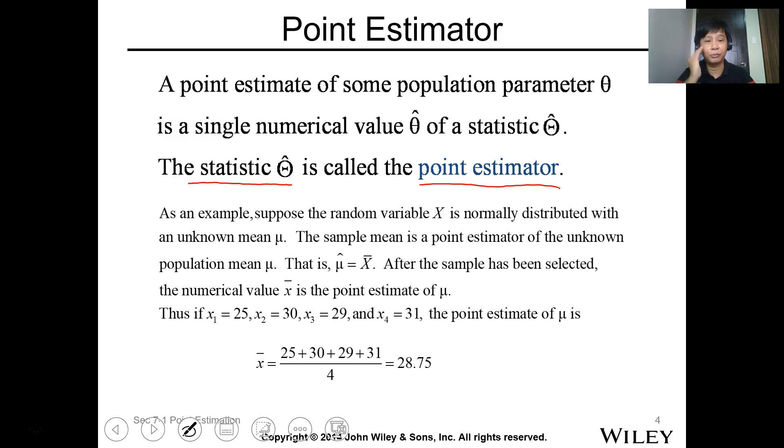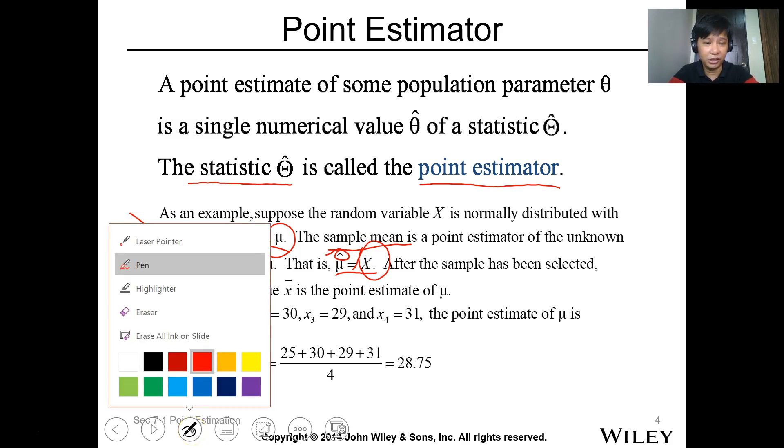So point estimation or a point estimate of the population, which we call statistics, is the point estimator of the population. For example, we have this random variable which has a normally distributed with unknown mean. So this mean is for the population. The sample mean, meaning we have collected samples, is a point estimate of the population mean. So that is your mu hat, which is an estimate, is equal to your x bar, which is the sample mean.